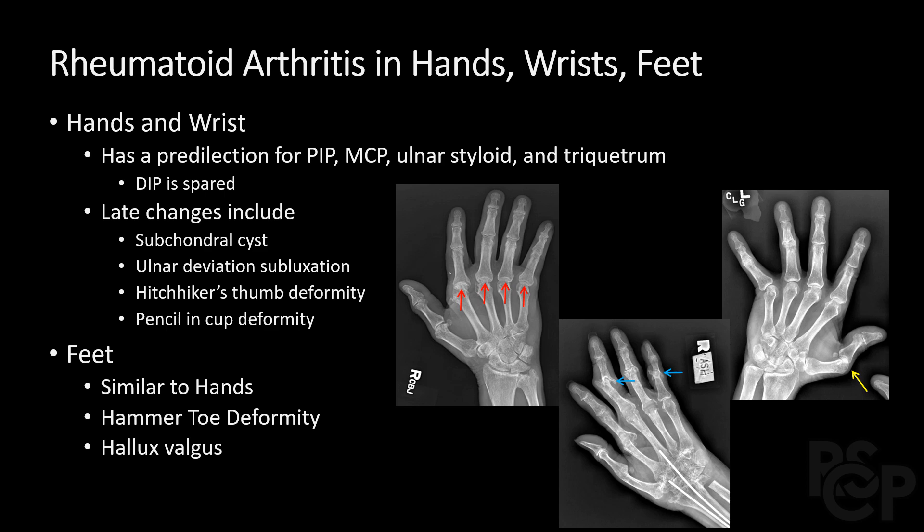Now I'm going to discuss rheumatoid arthritis in the hands, wrists, and feet. In the hands and wrists, there's a predilection for the PIP, MCP, ulnar styloid, and triquetrum joints. The DIP is usually spared.